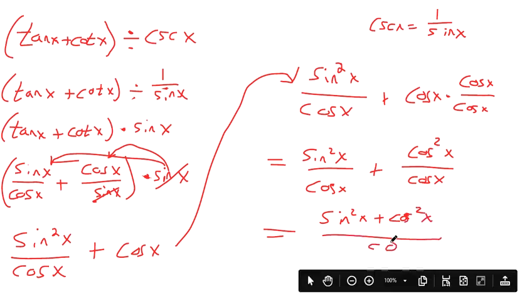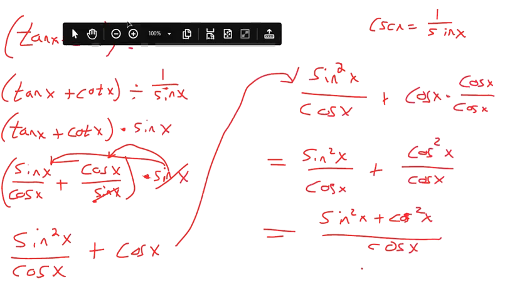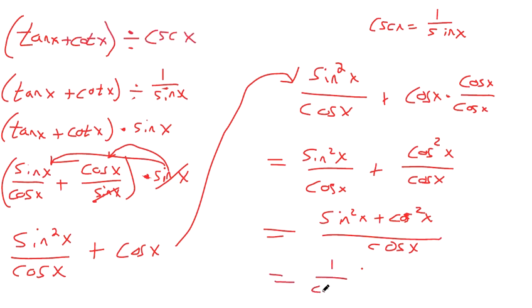And this is the Pythagorean identity. Earlier on in the course, we saw that sine squared plus cosine squared equals one. So sine squared plus cosine squared at the top is just one. So now we have one over cosine of x. And we know that's secant x because secant is the reciprocal of cosine of x. That's our answer.